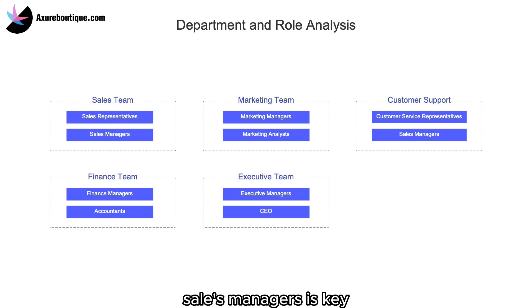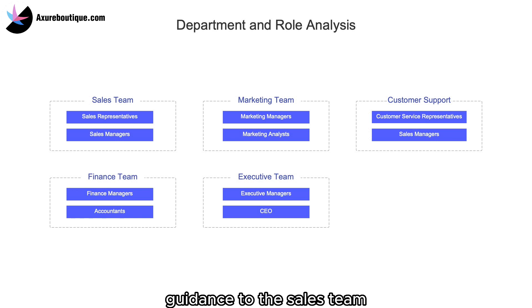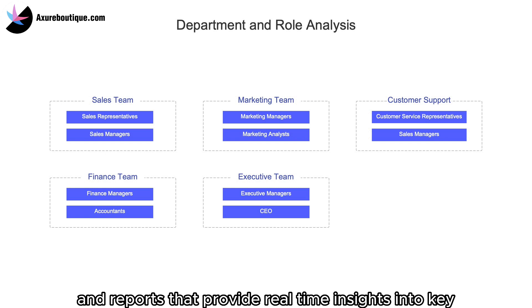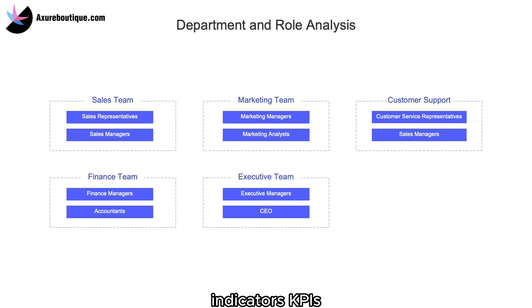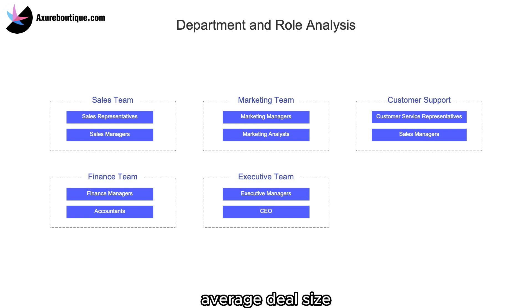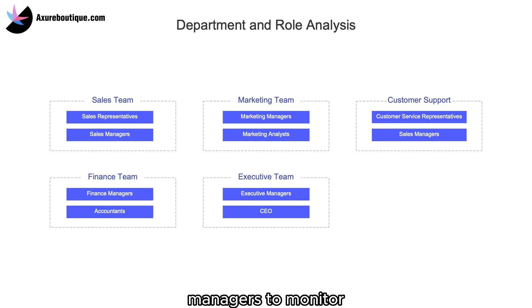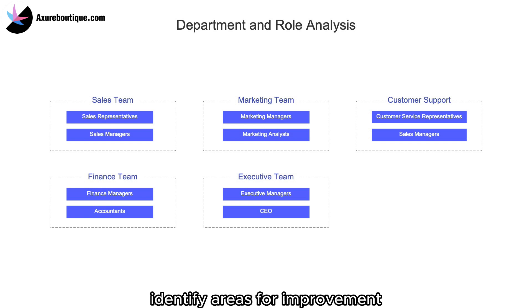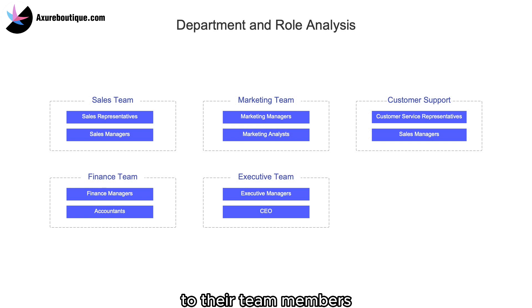Sales managers require features for performance tracking and providing guidance to the sales team. A CRM system can offer dashboards and reports that provide real-time insights into key performance indicators (KPIs) such as sales revenue, conversion rate, average deal size, and sales cycle length. This allows sales managers to monitor individual and team performance, identify areas for improvement, and provide targeted coaching and support to their team members.